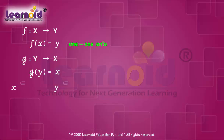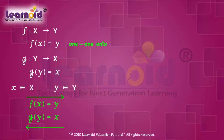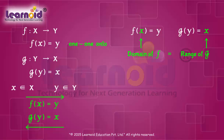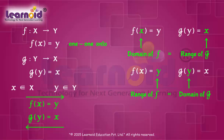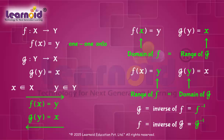Where element x and y belong to sets X and Y, f of x is equal to y, and g of y is equal to x. Domain of f is equal to range of g. Range of f is equal to domain of g. The function g is called the inverse of f and is denoted by f to the power minus 1. g is also 1-1 and onto, so inverse of g is f. f and g are inverses of each other.